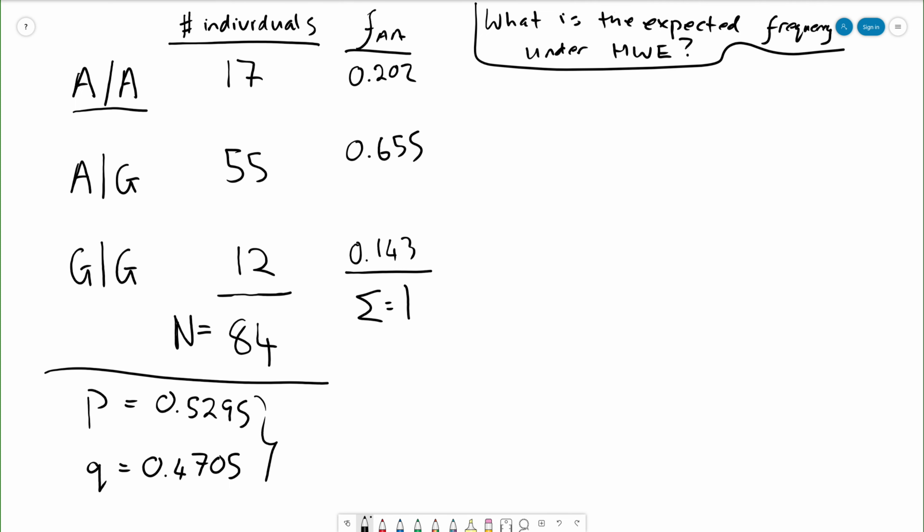We expect to see the heterozygote with a frequency equal to 2PQ, which is equal to 0.4982595.